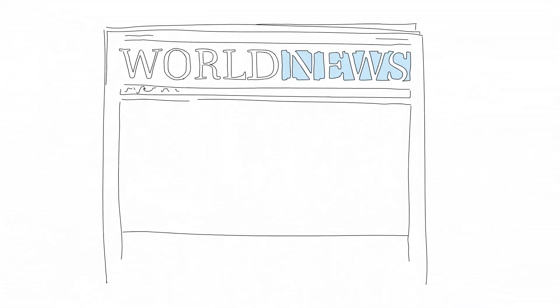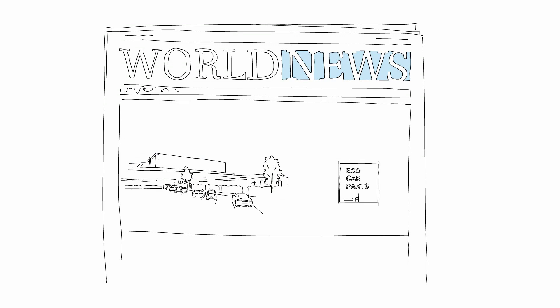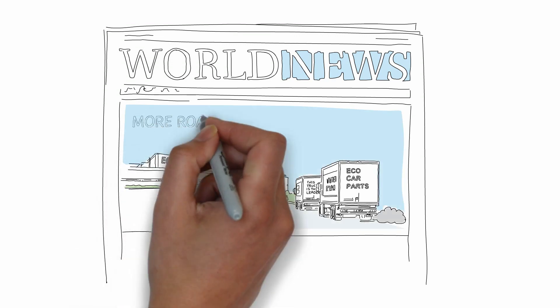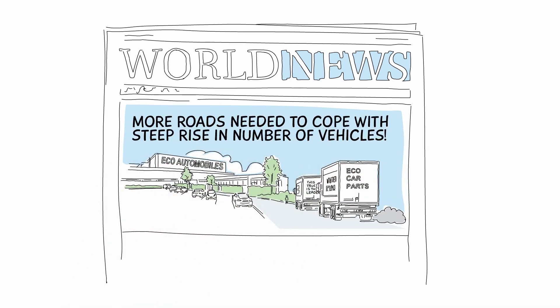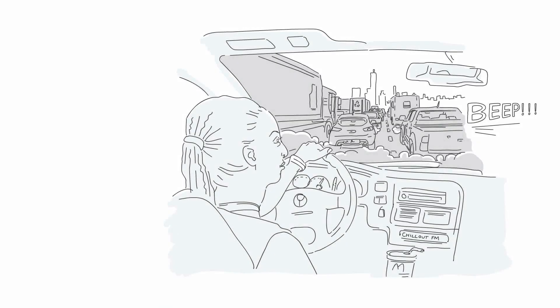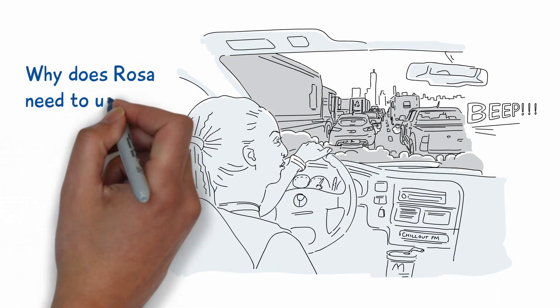But, and she knows it, this isn't enough. Cars remain a very resource intensive and inefficient way to deliver what is needed. Being transformative means thinking much wider. Why does Rosa need to use a car anyway?